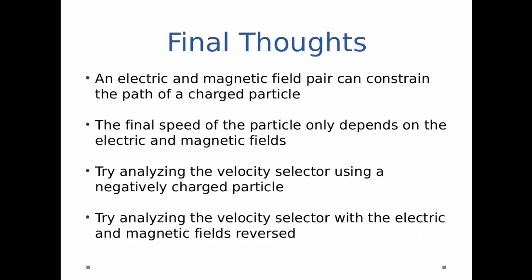So a few final thoughts. First off, an electric and magnetic field pair can constrain the path of a charged particle. The final speed of the particle only depends on the electric and magnetic fields. So try analyzing this velocity selector using a negatively charged particle instead of the positive one. And try it again analyzing it with the electric and magnetic fields reversed.